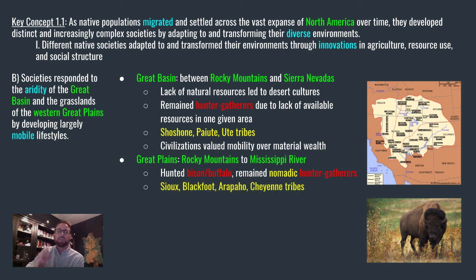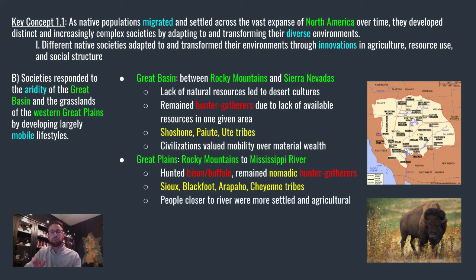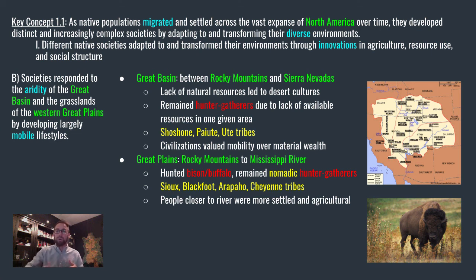Tribes in the Great Plains: the Sioux, the Blackfoot, the Arapaho, the Cheyenne — some of those names should look familiar. Cheyenne is the capital of Wyoming today, so you'll see a lot of these names tied to things still around America. As you got closer to the river, people tended to be more settled and more agricultural. If you're closer to the river, you have more access to water, and it was easier to divert that water to create irrigation. That is what determined how different Native American civilizations developed their lifestyle.